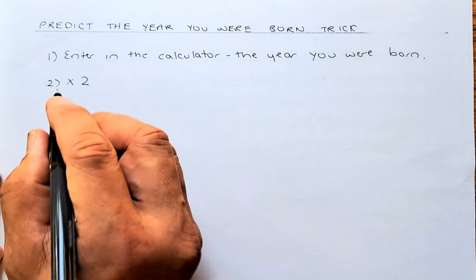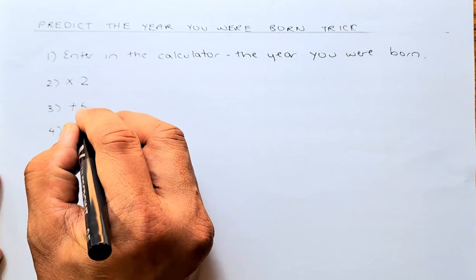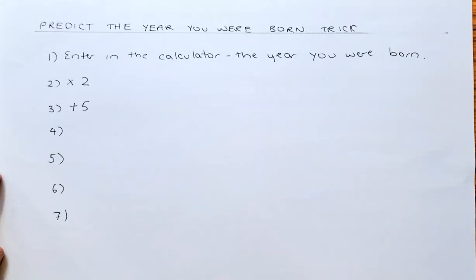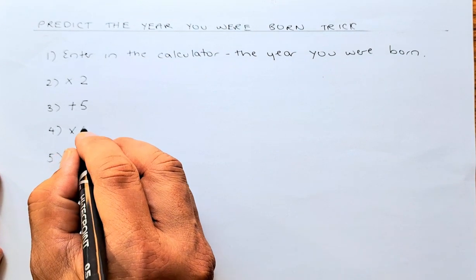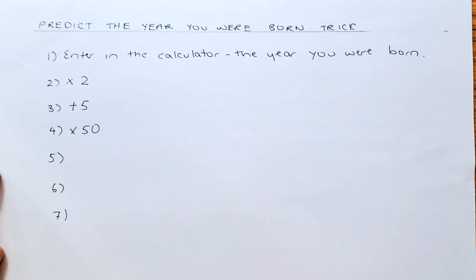In the next step, you are going to add 5 and then followed by multiply by 50. So now, you have a number that is maybe 4 or 5 digits.